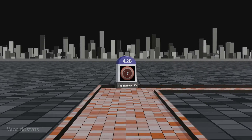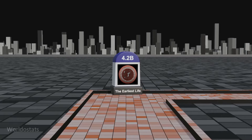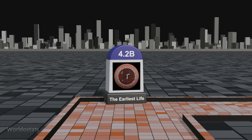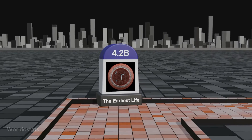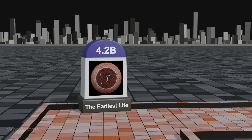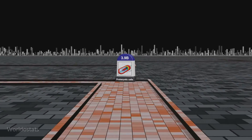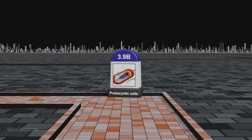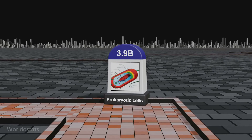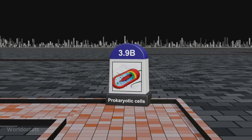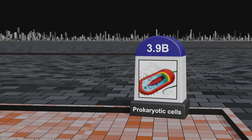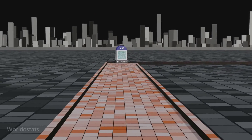Around 4.2 billion years ago, the earliest life appears, possibly as protocells. Their genetic material was probably composed of RNA, capable of self-replication. Around 3.9 billion years ago, prokaryotic cells appear. They are simple, single-celled organisms that lack a true nucleus and membrane-bound organelles, typically represented by bacteria and archaea.